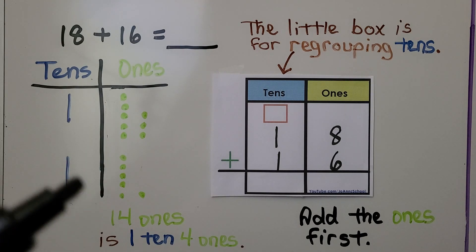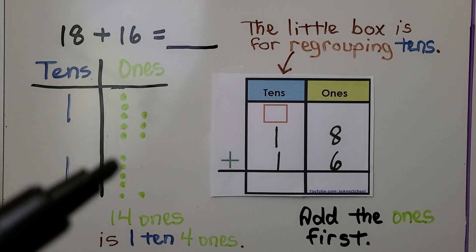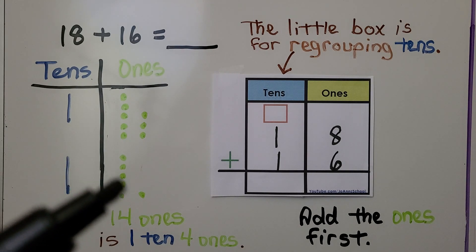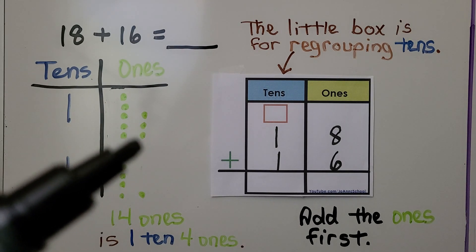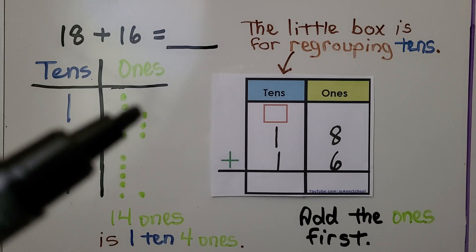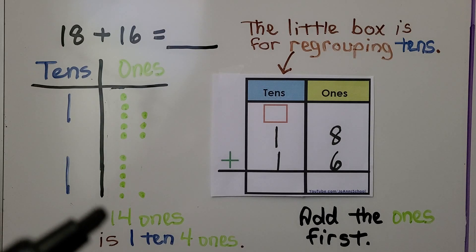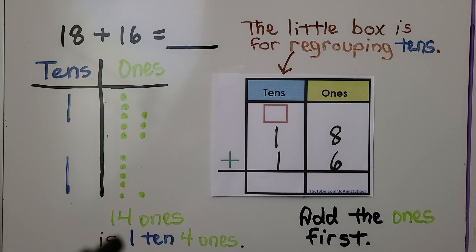We count the ones: five, ten, eleven, twelve, thirteen, fourteen ones. And fourteen ones is one ten, four ones.